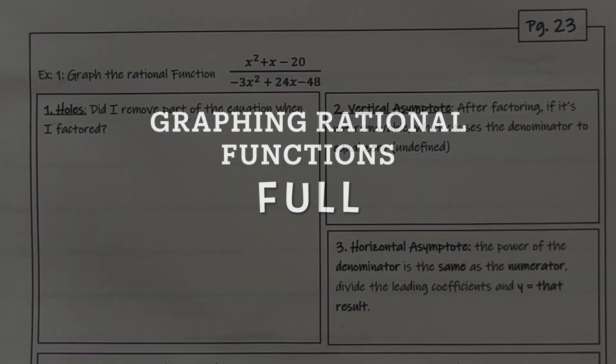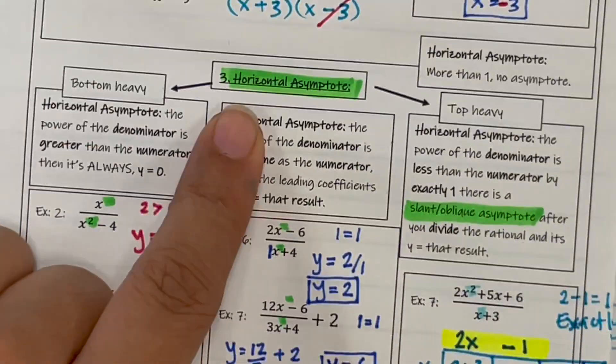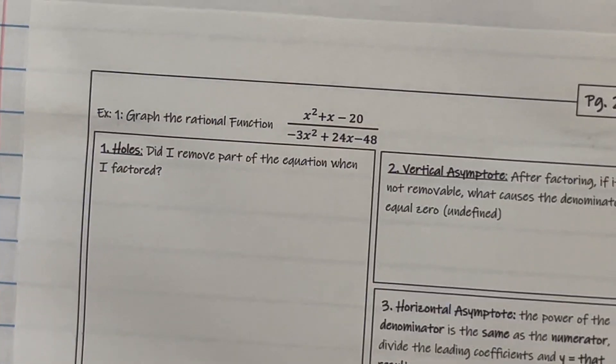Now we're going to take a look at graphing rational functions in full. So each of the five steps that we previously looked at: holes, vertical asymptotes, horizontal asymptotes, intercepts, and evaluating functions.